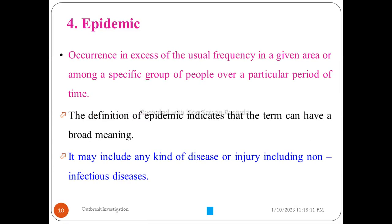An epidemic occurs in excess of the usual frequency in a given area or a specific group of people over a particular period of time. The COVID-19 pandemic is an example — what began as an epidemic in China spread globally to become a pandemic. The definition of epidemic indicates that the term can have a broad meaning and may include any kind of disease or injury, including non-infectious disease.